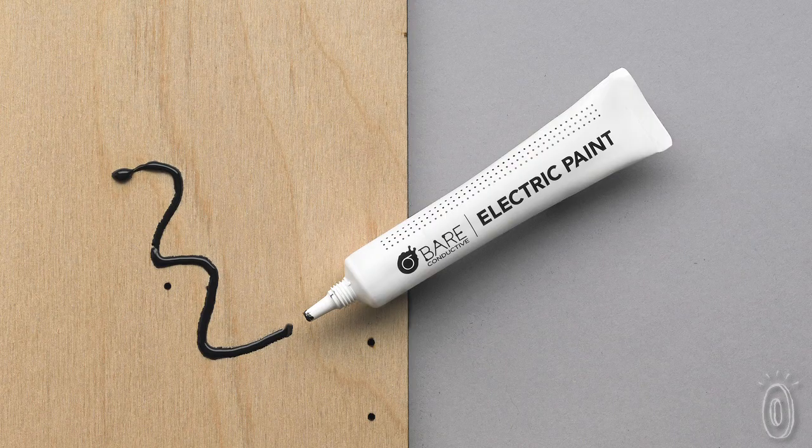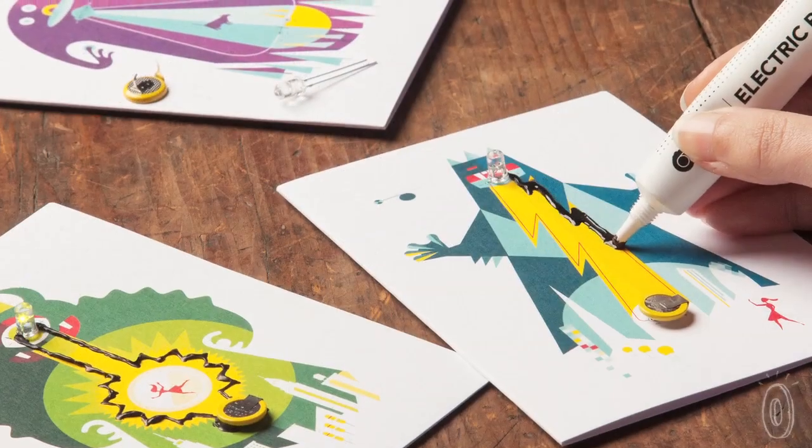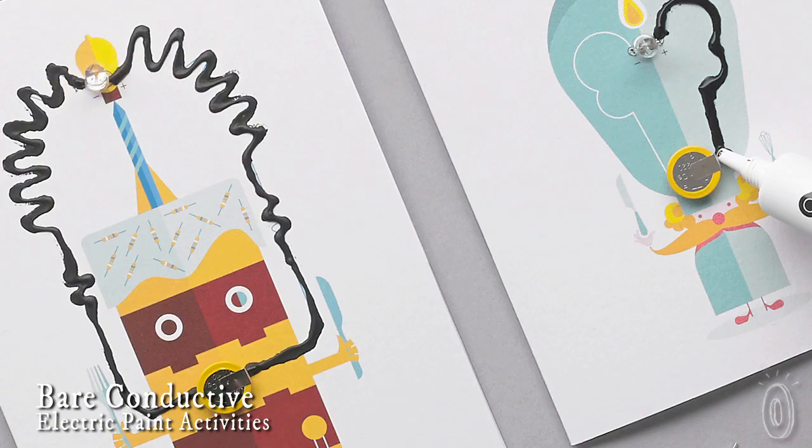Paper, wood, walls, fabric, and all sorts of new electronic projects are now possible. And for beginners of all ages, or for anyone who just wants a fun simple project, Bare Conductive makes flashing card sets.